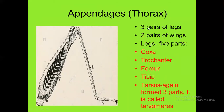The appendages include three pairs of legs and two pairs of wings. Each leg consists of five parts: coxa, trochanter, femur, tibia, and tarsus. The coxa is the first part, the trochanter is the smallest part, then femur, then tibia, and finally the tarsus. The tarsus again consists of three parts called tarsomeres.